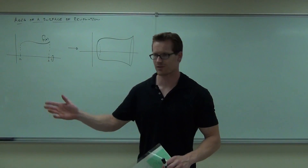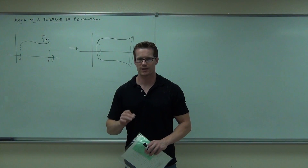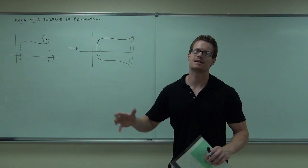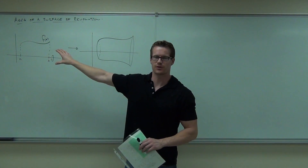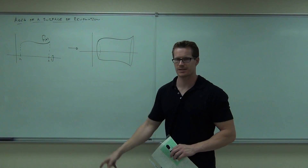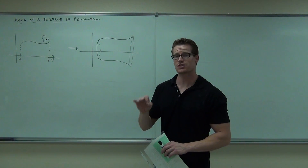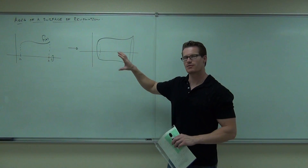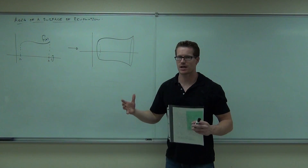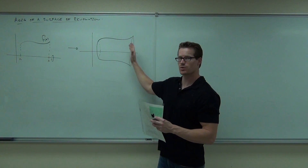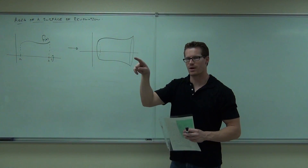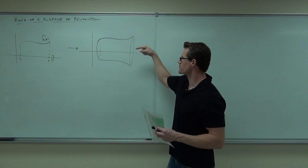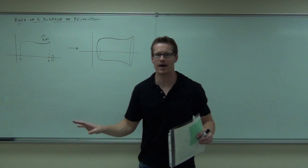I'm going to give you a pretty thorough explanation on how to find the surface area of revolution. The idea is to start with a function — my famous function — and revolve it around the x-axis to find the surface area of the solid we create. How much wrapping paper would you need to cover the entire figure on the outside? We're not going to include the ends; the ends would be just a basic geometry problem — area of a circle.